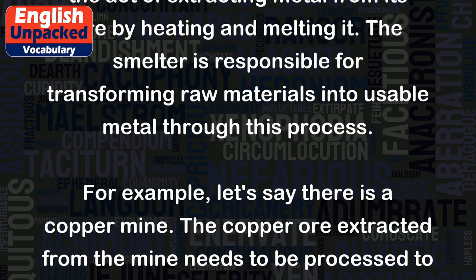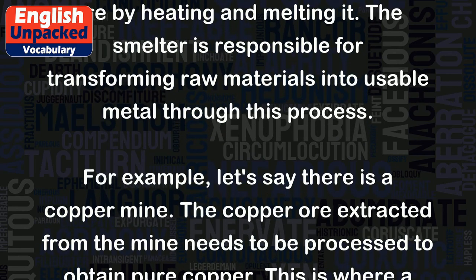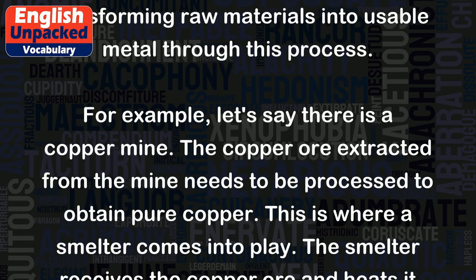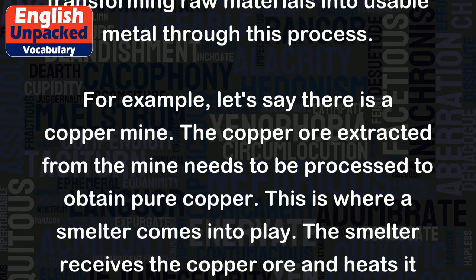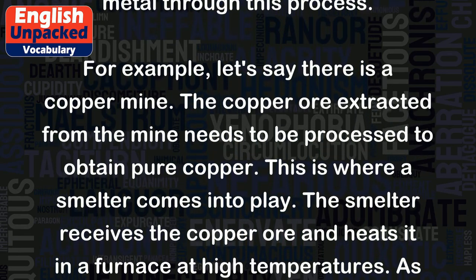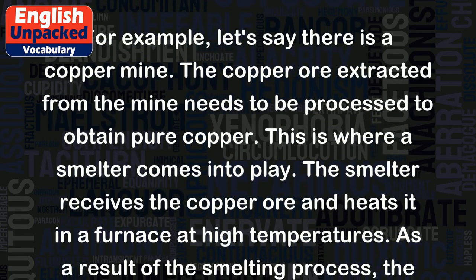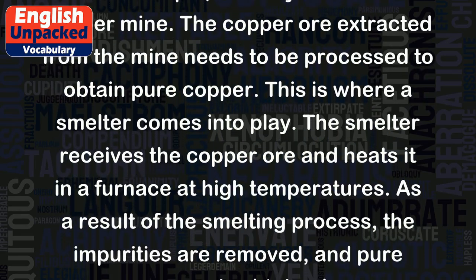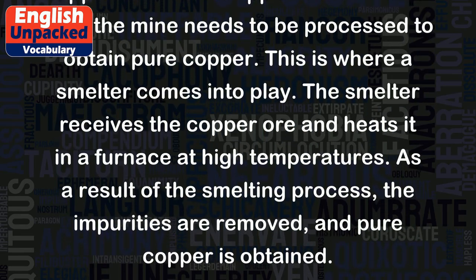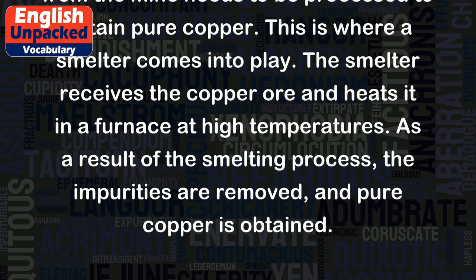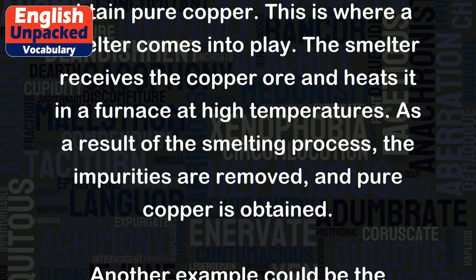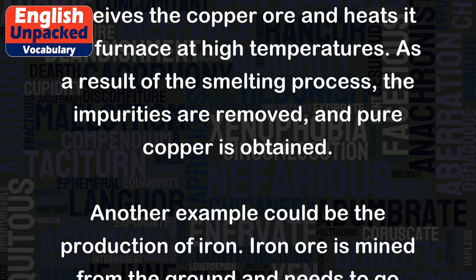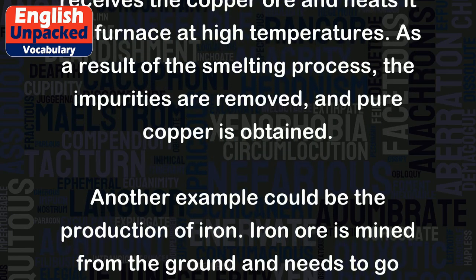For example, let's say there is a copper mine. The copper ore extracted from the mine needs to be processed to obtain pure copper. This is where a smelter comes into play. The smelter receives the copper ore and heats it in a furnace at high temperatures. As a result of the smelting process, the impurities are removed, and pure copper is obtained.